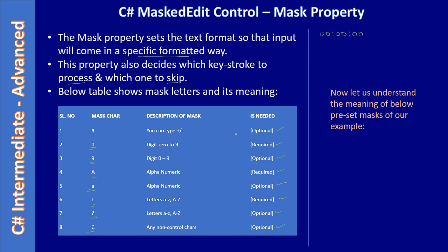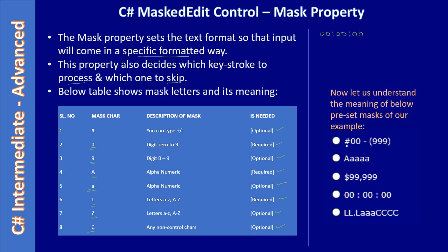Now let's understand the preset mask values. There are five preset masks that help in getting formatted input, and the keyed-in characters are validated at the time of typing. For example, '#' allows plus or minus; '00' means the user must type a number — those are required. The literal characters like slashes and colons are constant literals that are always displayed. '999' means the numbers are optional in those placeholders.